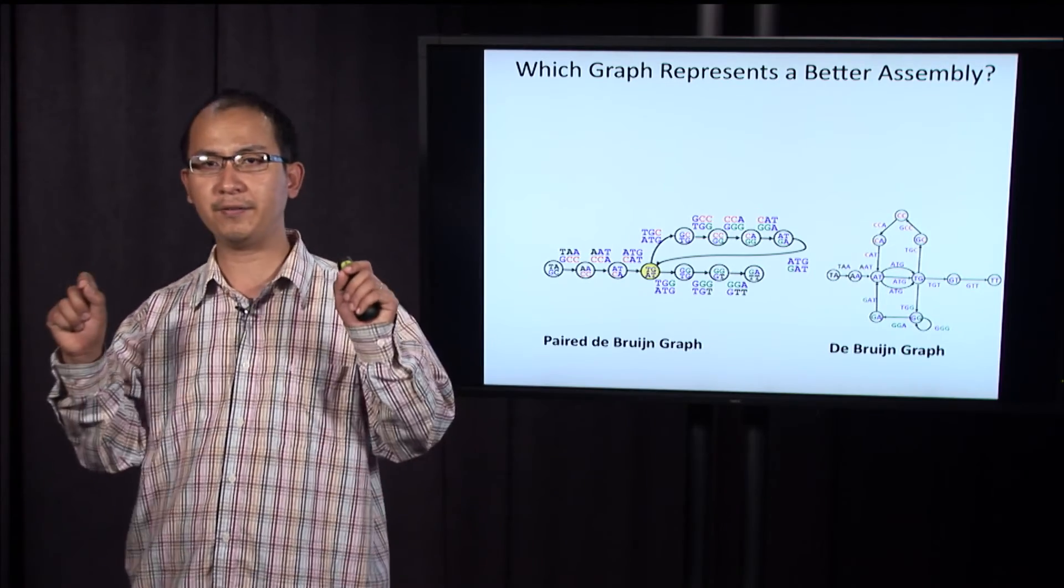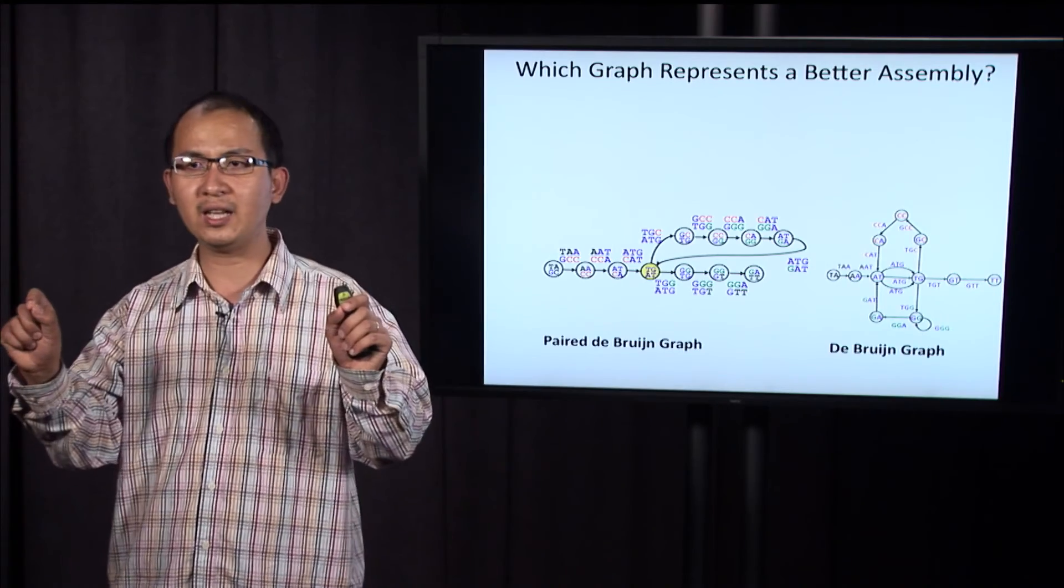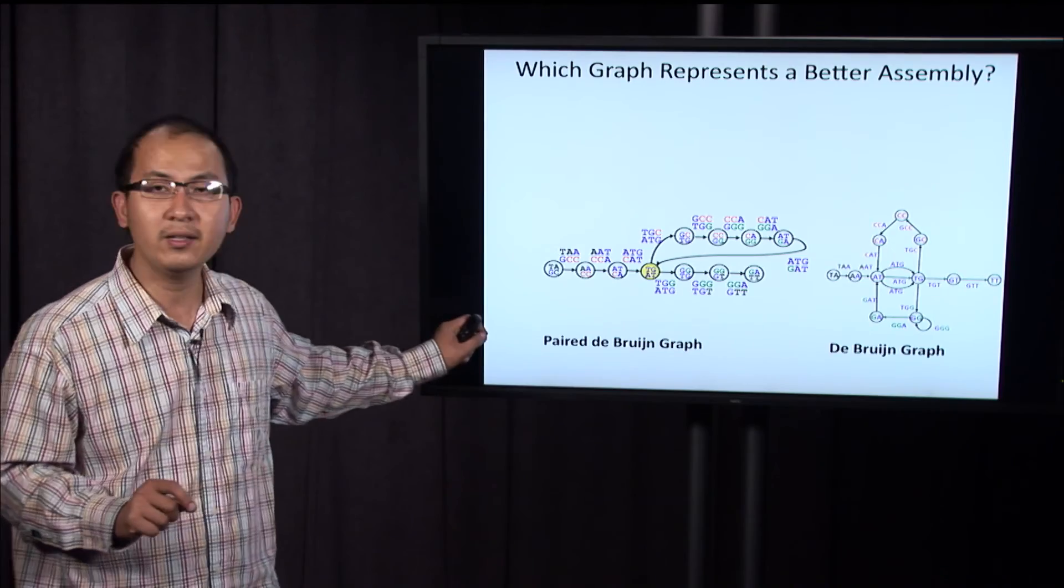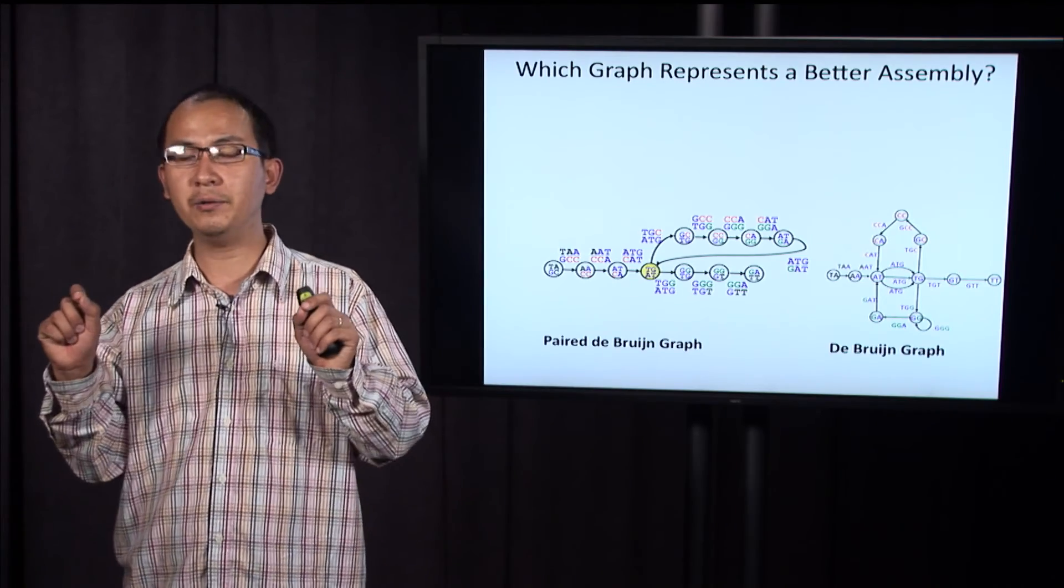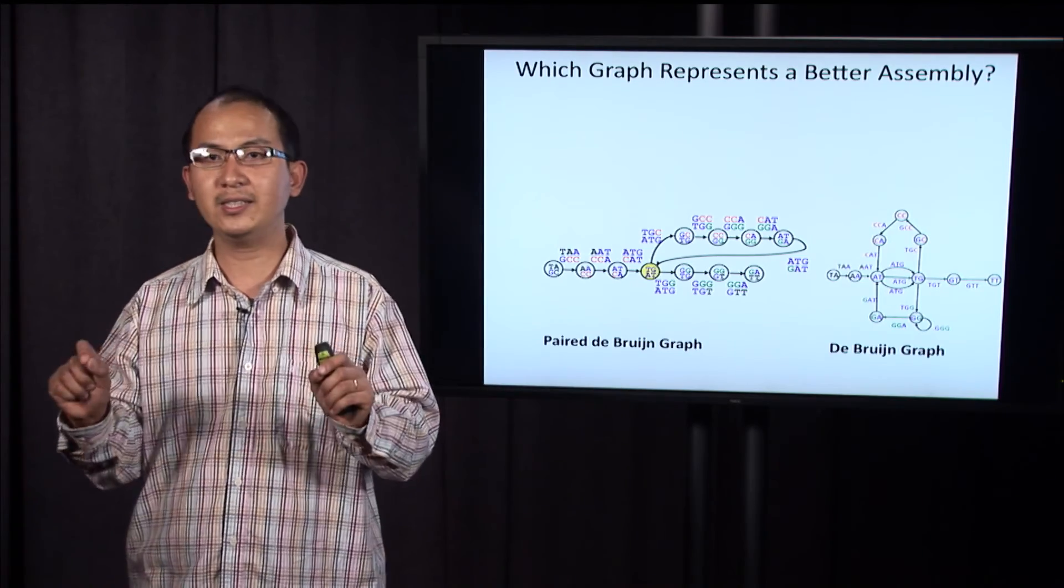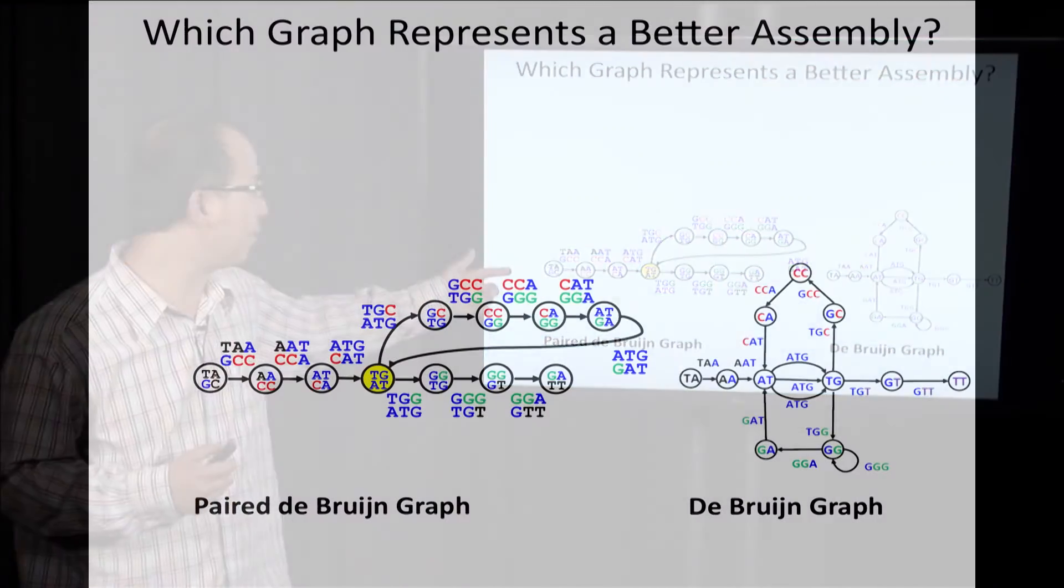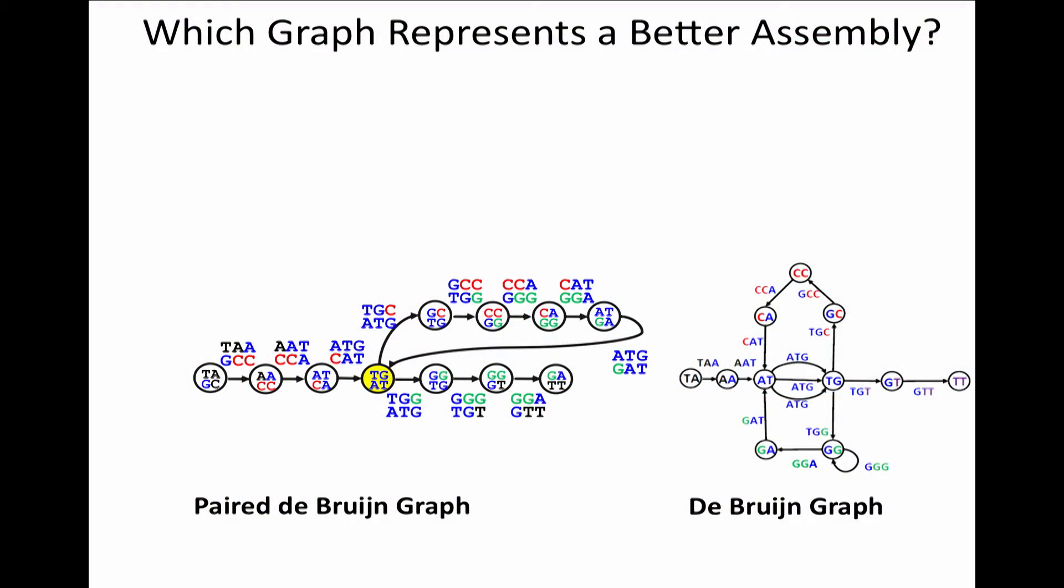Both of these graphs can be obtained by gluing operations on the genome path. But because of the difference in the labeling, the paired de Bruijn graph is obtained by fewer gluings, and that makes it simpler. In this case, you can see that the paired de Bruijn graph is simpler than the de Bruijn graph.